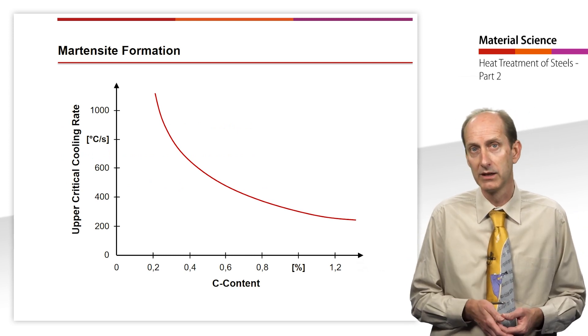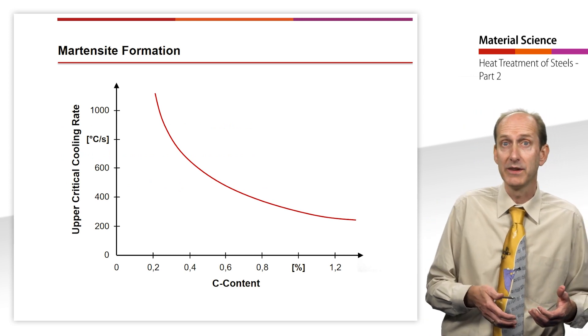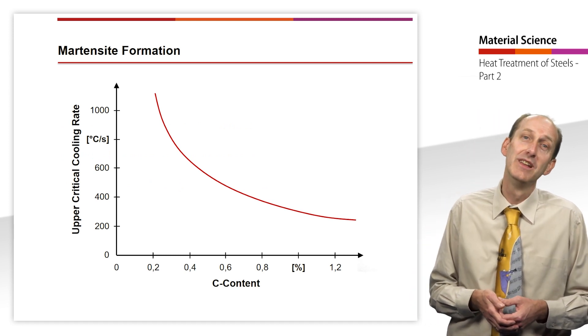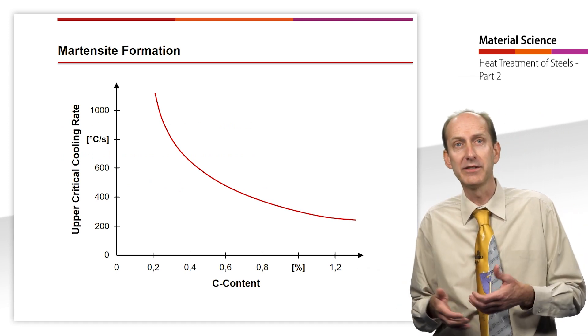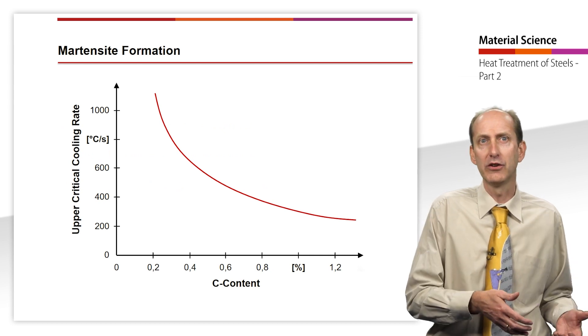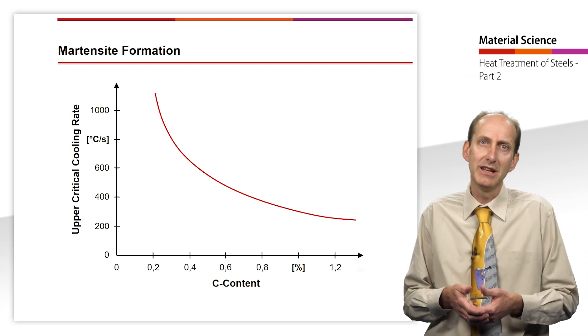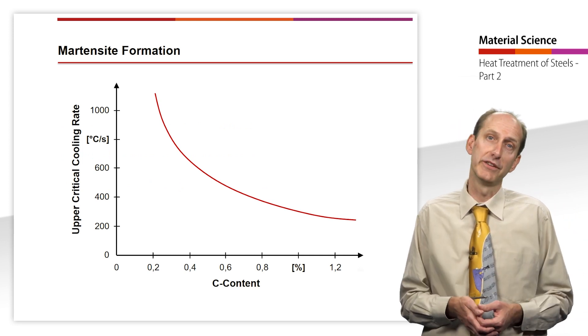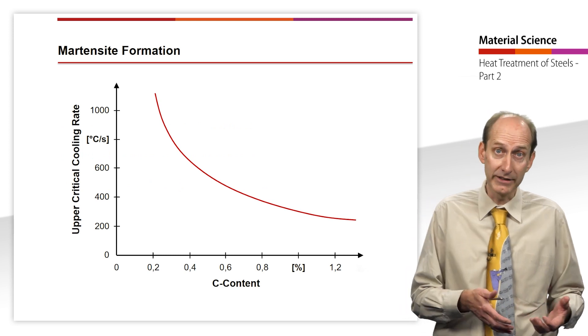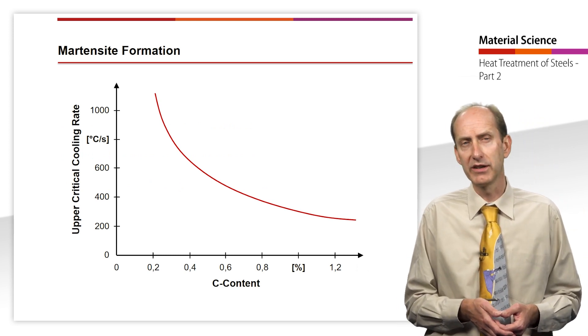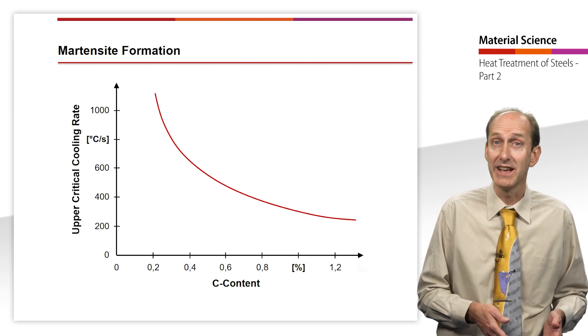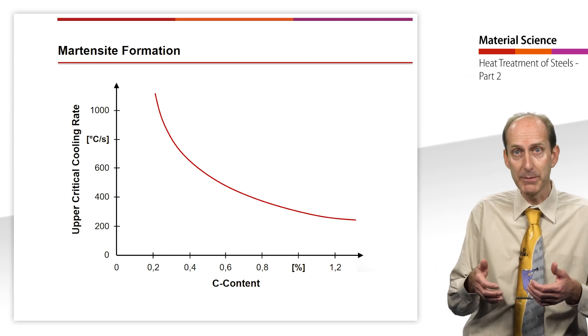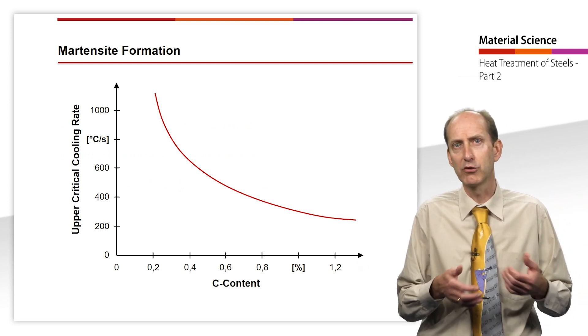The martensite is thus formed without any change of position of the carbon atoms. The carbon is forcibly dissolved and distorts the lattice tetragonally. The resulting internal stresses together with the solid solution hardening by the carbon atoms lead to the great hardness and at the same time brittleness of the martensitic structure. The hardness, which is strongly dependent on the carbon content, is between 400 and 850 HV. The forming plate-shaped crystals appear in the micrograph as needles.